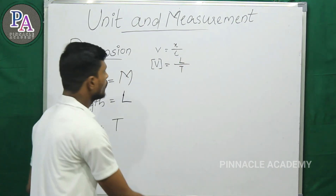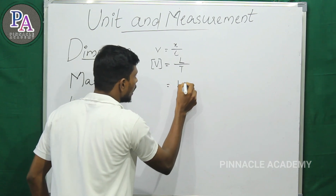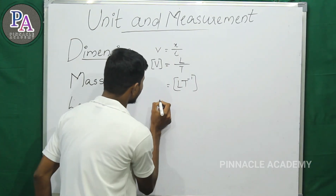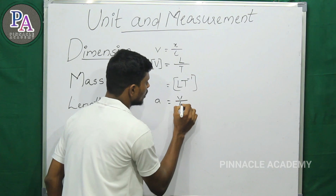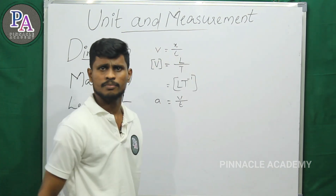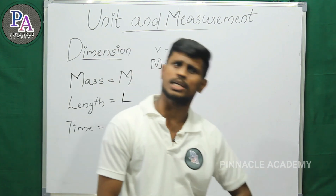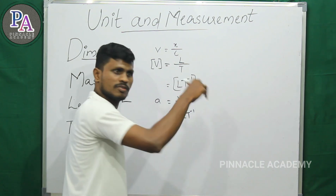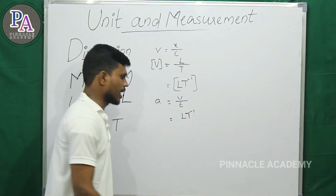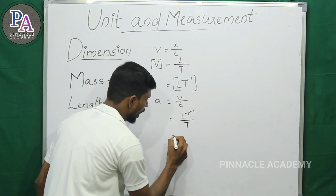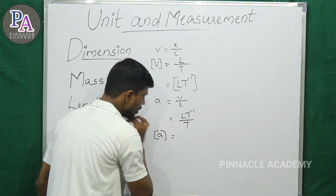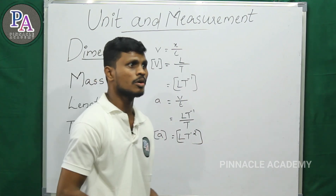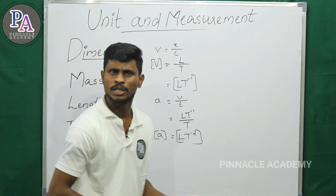The dimension of velocity is L T raised to minus 1. Now for acceleration — acceleration is equal to velocity by time. Velocity has dimension L T raised to minus 1, divided by time T, giving acceleration the dimension L T raised to minus 2.